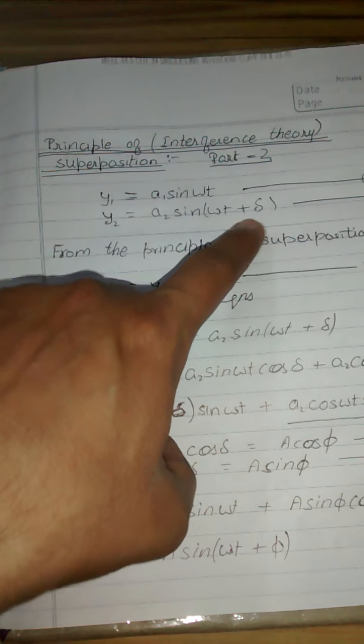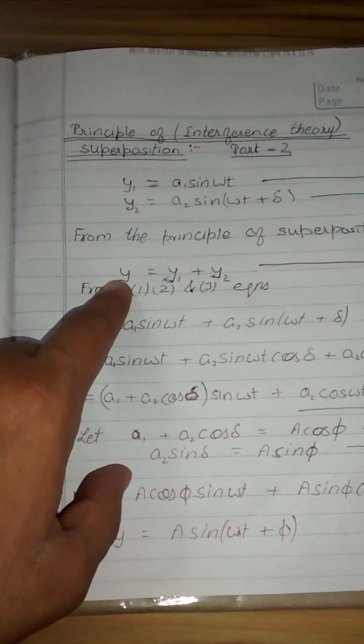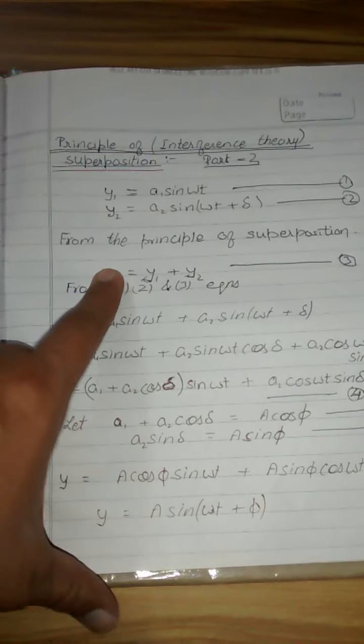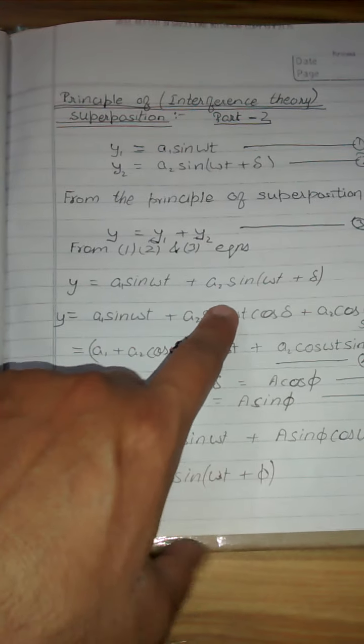From the principle of superposition, y is equal to y1 plus y2. We put the value of each of them.